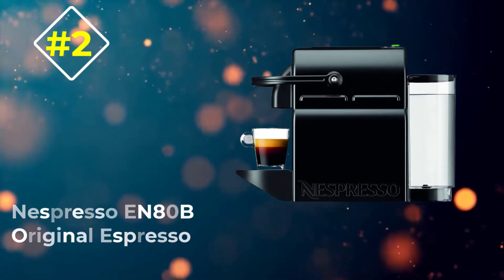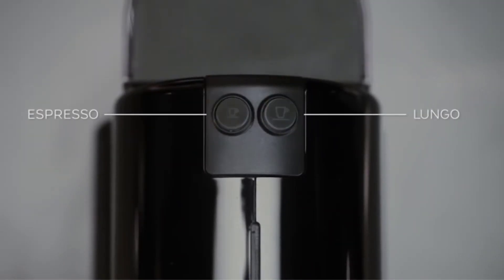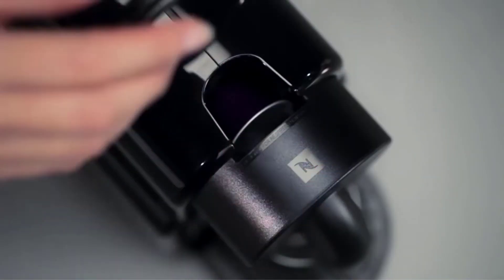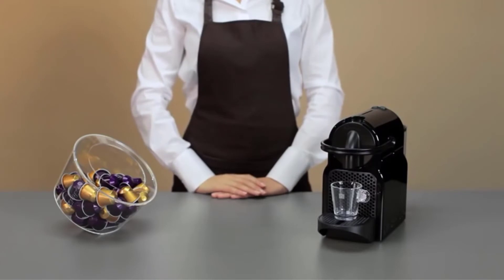Number 2. Nespresso EN80B Original Espresso Machine. This next model is a super basic machine all around. The Inissia uses the original capsules, and it's our overall pick as best Nespresso machine for the money. We think you'll enjoy how reliable it is, and how well the slim design can fit into any kitchen. Because the Inissia uses the original capsules, it is, like the previous model, a good choice for those who already know what kind of Nespresso they like.